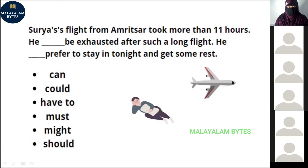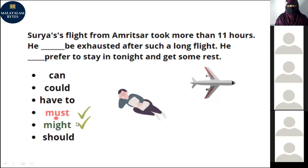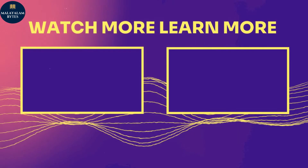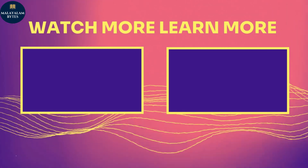Surya's flight from Amritsar took more than 11 hours. 'He must be exhausted after such a long flight' — we use 'must' because it is certain he is exhausted given the long journey. 'He might prefer to stay in tonight and get some rest' — we use 'might' because it is a probability, it is up to him to decide. Both answers are correct. Have a great day, God bless. That's excellent!